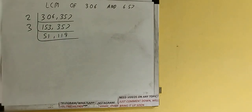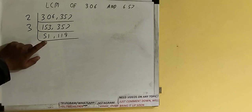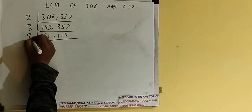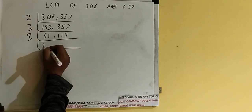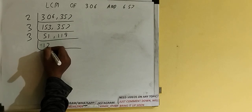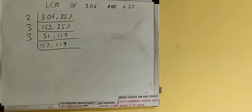Again we check: is any number divisible by 3? The first number, 51, is divisible by 3, but 119 is not. So we divide only the first number by 3, giving us 17, and copy the second number, 119, down. Now neither number is divisible by 3.